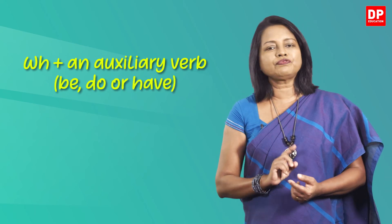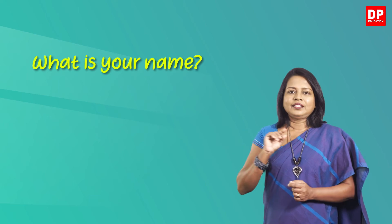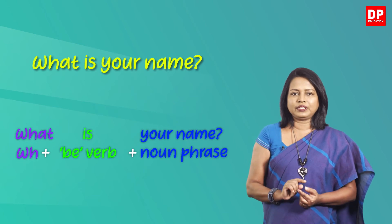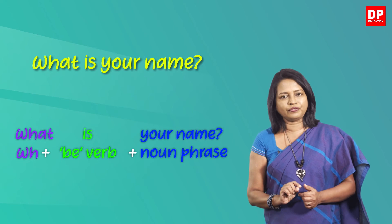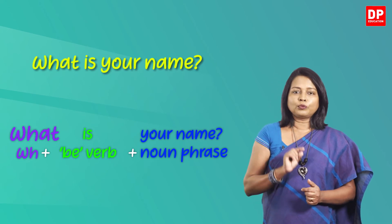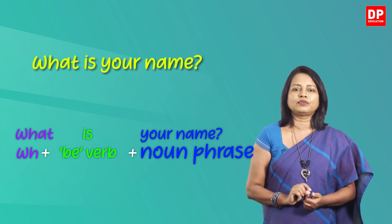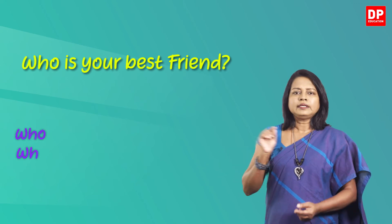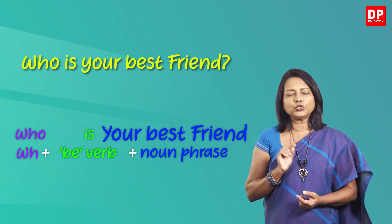I'm going to teach you two ways of forming WH questions today. Look at this question. Here you have the WH question word, the be verb, and then a noun phrase. So children, when you write a be verb after the WH question word, there can be a noun phrase after that. Here 'what' is the WH question word, 'is' is the be verb, and 'your name' is the noun phrase.